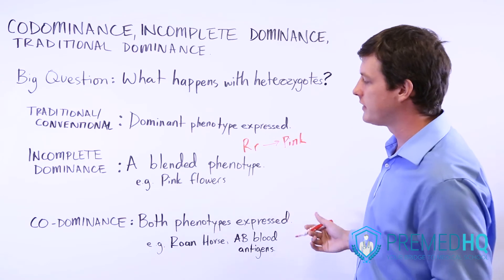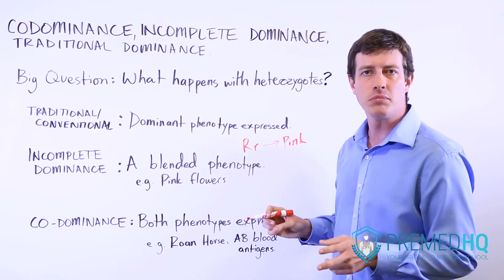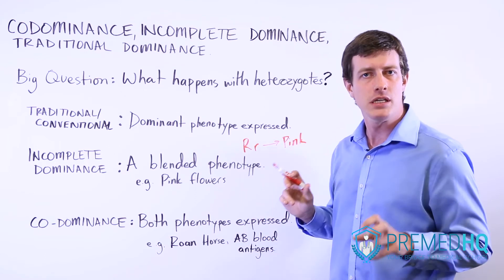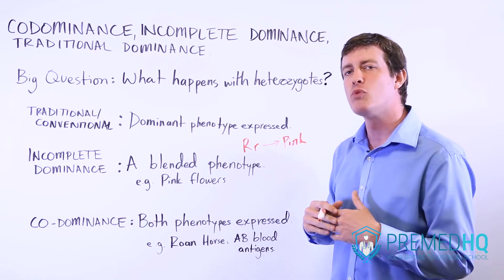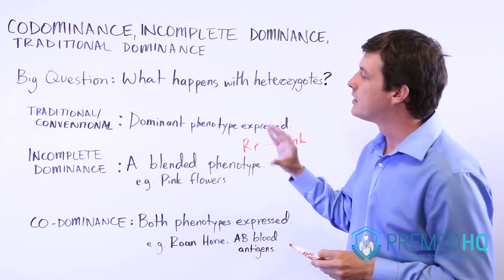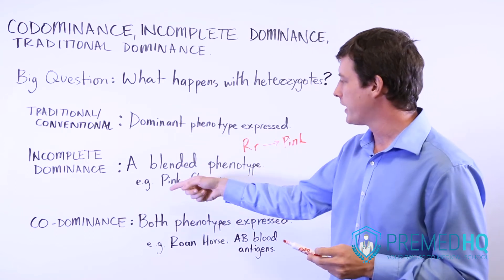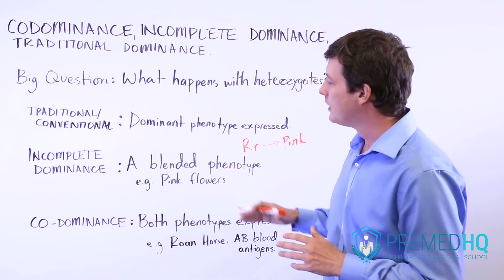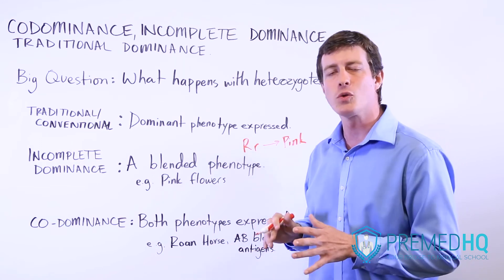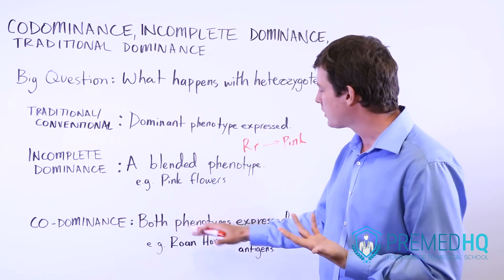Another example seen in human physiology is with blood antigens. Somebody with an A and B allele will have red blood cells — erythrocytes — that display both the A and B antigens, giving the AB blood type. Neither A nor B is more dominant than the other; both are evident, expressing both phenotypes. The big distinction to know is incomplete dominance, where you see a blended phenotype like red and white combining into pink flowers, versus codominance, where you see both phenotypes expressed individually — like a roan horse with some pure red and some pure white areas.